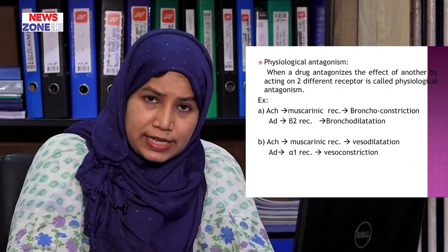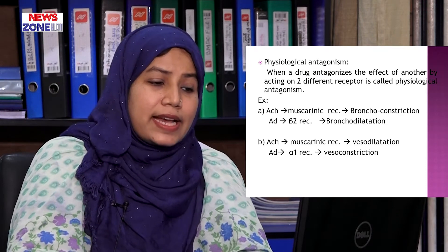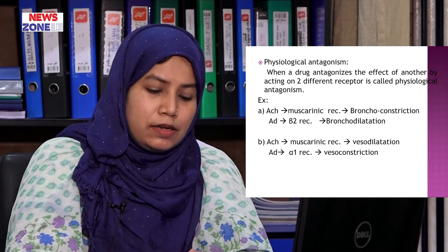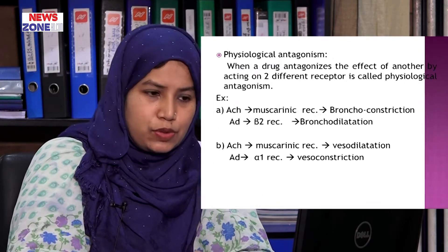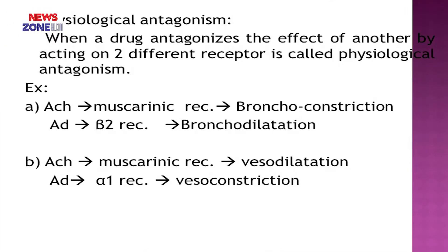Physiological antagonism: when a drug antagonizes the effect of another drug by acting on two different receptors, it is called physiological antagonism — note, two different receptors. For example, acetylcholine acts on muscarinic receptors in the lungs and causes bronchoconstriction. On the other hand, adrenaline acting on beta-2 receptors causes bronchodilation. So acetylcholine and adrenaline cause bronchoconstriction and bronchodilation respectively by acting on two different receptors — this is physiological antagonism.